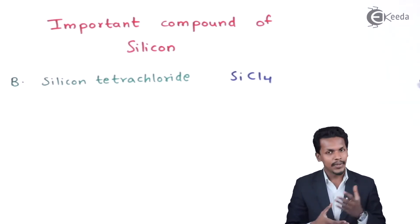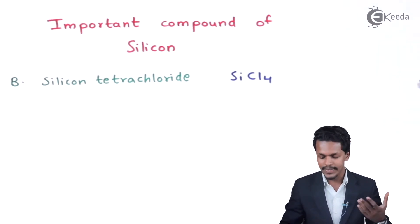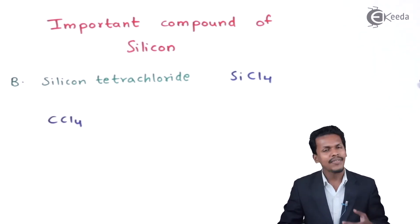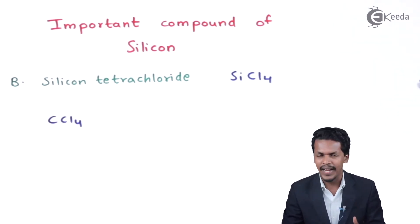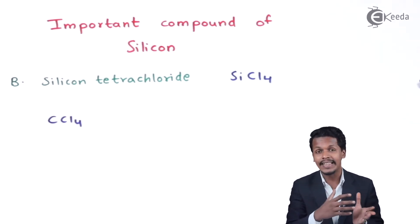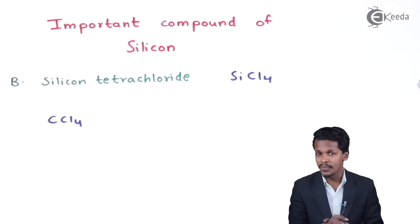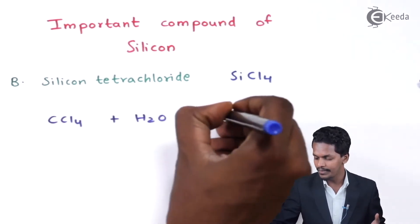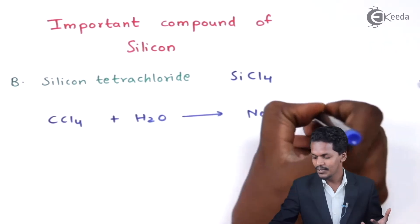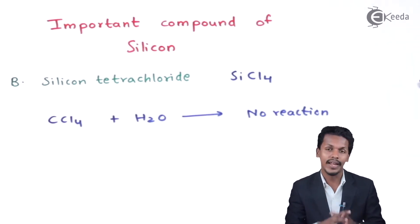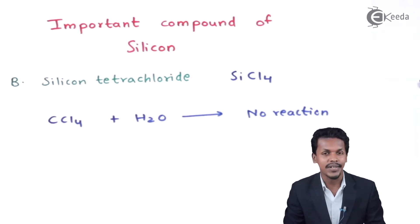For example, consider CCl₄. We know that CCl₄ is a very stable compound and does not react with water — it does not undergo hydrolysis. Even if we react it with water (H₂O), we get no reaction. But when we compare this with silicon tetrachloride, silicon tetrachloride can easily undergo hydrolysis, and we can obtain orthosilicic acid as a product.